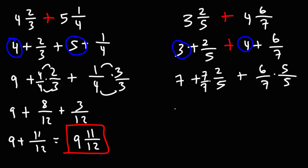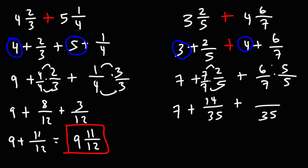So we'll multiply the second fraction by 5 over 5. Now let's multiply across. 7 times 2 is 14. 7 times 5 is going to be 35. And here we have 6 times 5, which is 30.